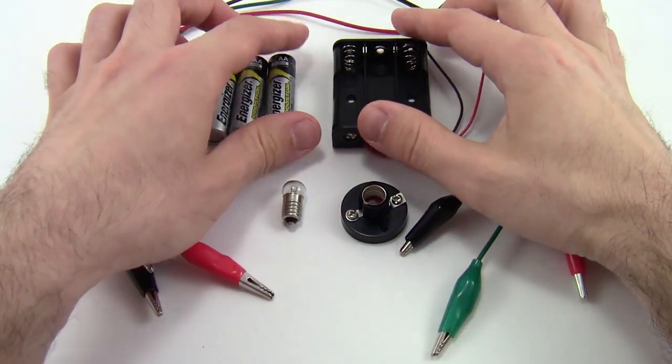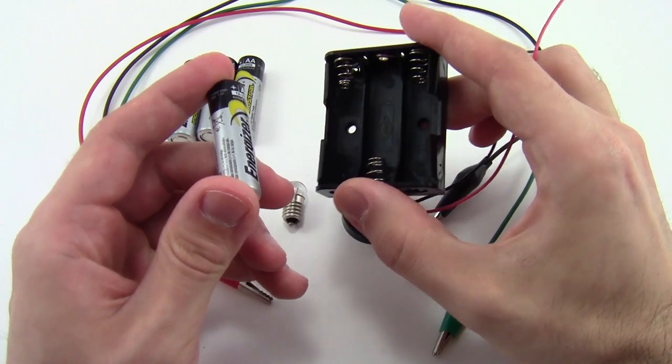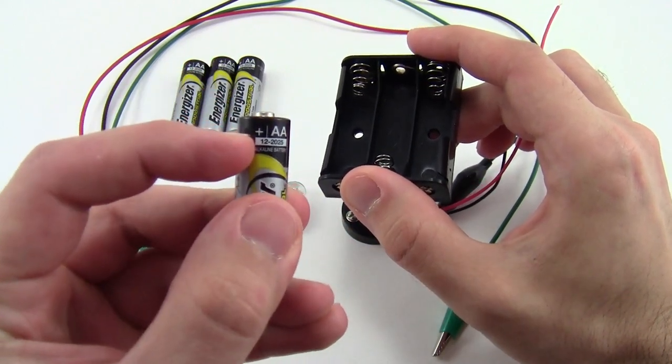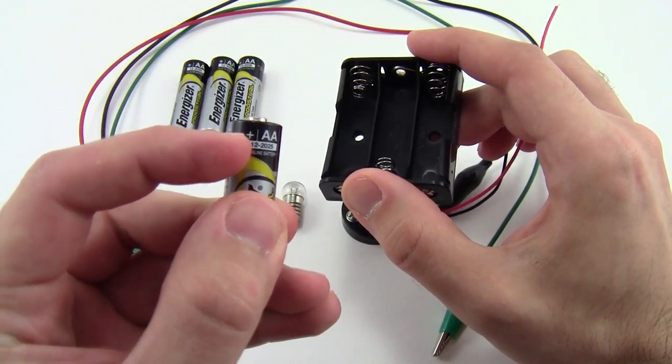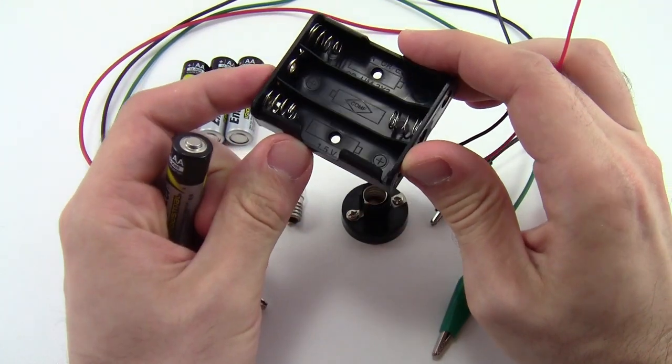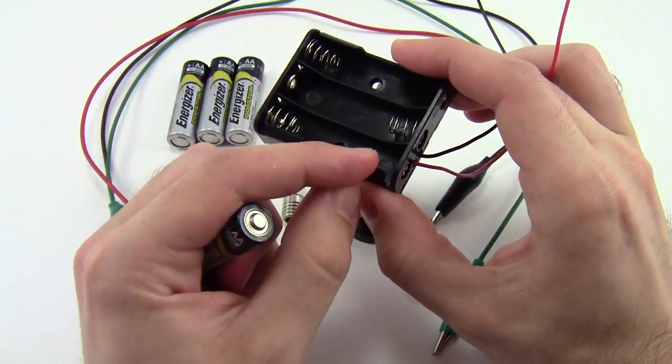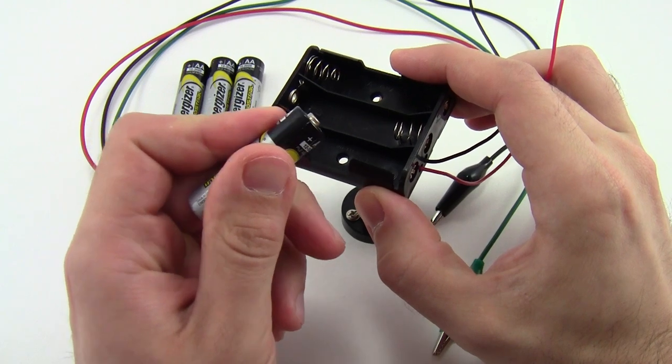To assemble your kit, first you're going to put three batteries in the battery holder. Look closely at the batteries. You see that there are plus signs on one end of the batteries. There are also plus signs printed inside the battery holder. Make sure those plus signs line up.